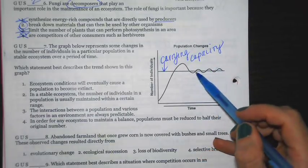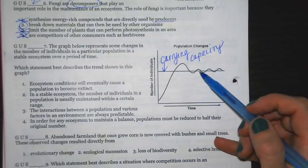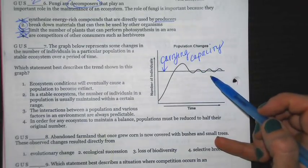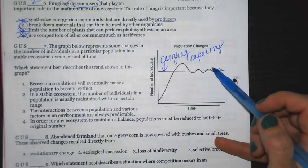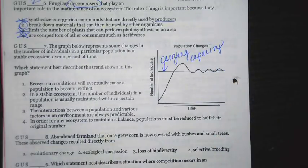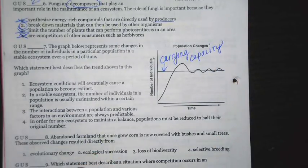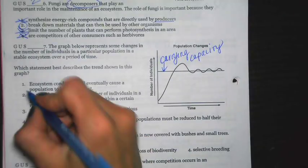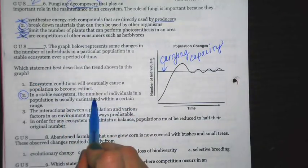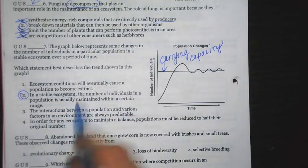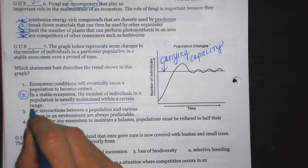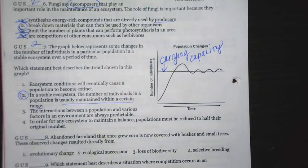That's because in the spring, more organisms are going to be produced than can possibly survive. Winter comes. Survival of the fittest. Many are going to die. Spring comes again. And it continues in this cycle. Best answer choice for this one is number two. In a stable ecosystem, the number of individuals is usually maintained within a certain range. And that range is carrying capacity.